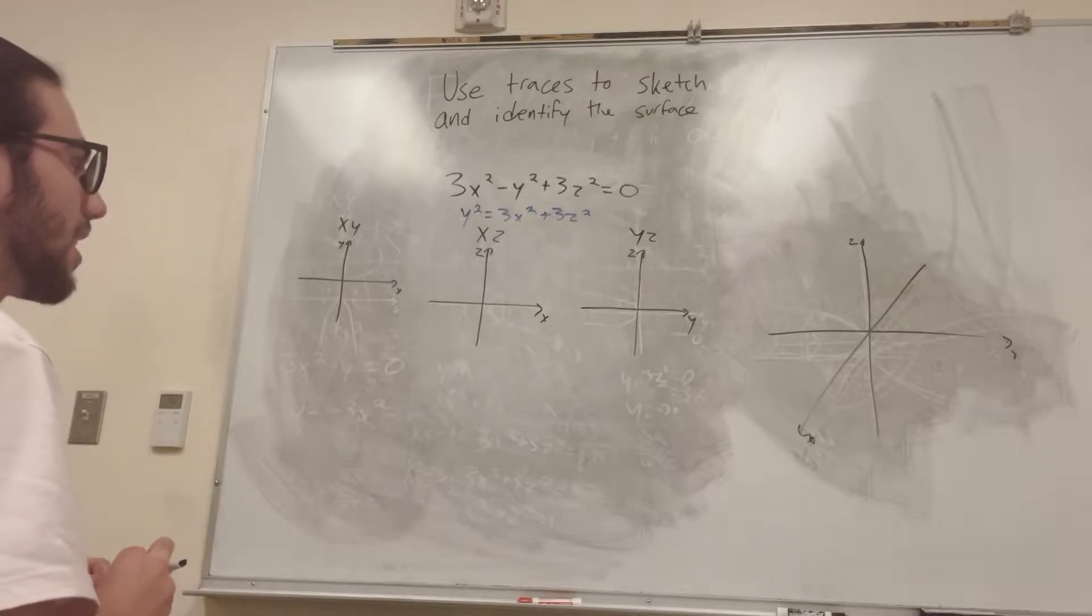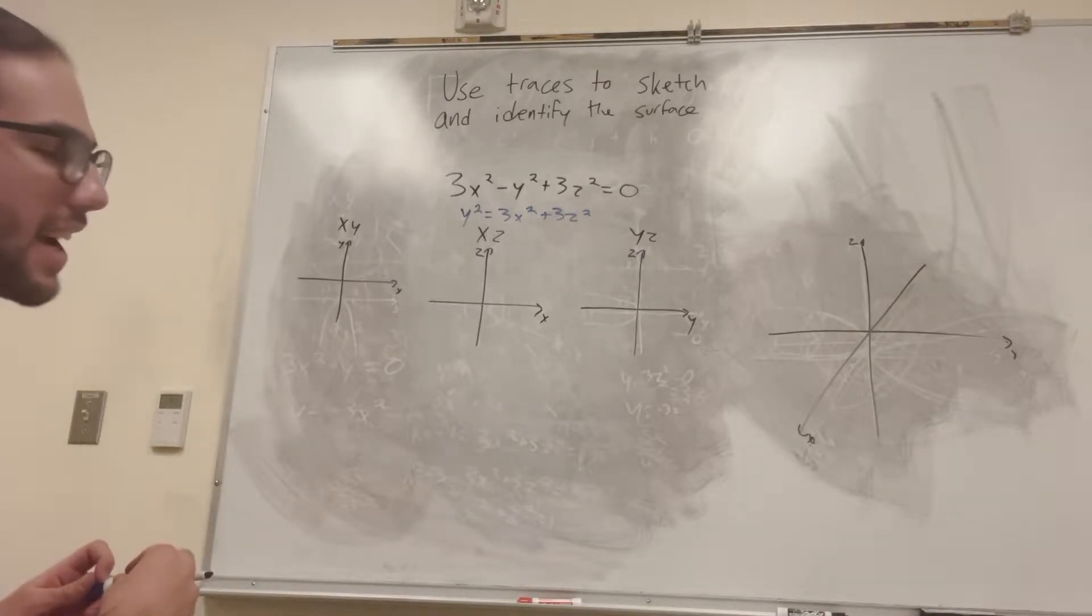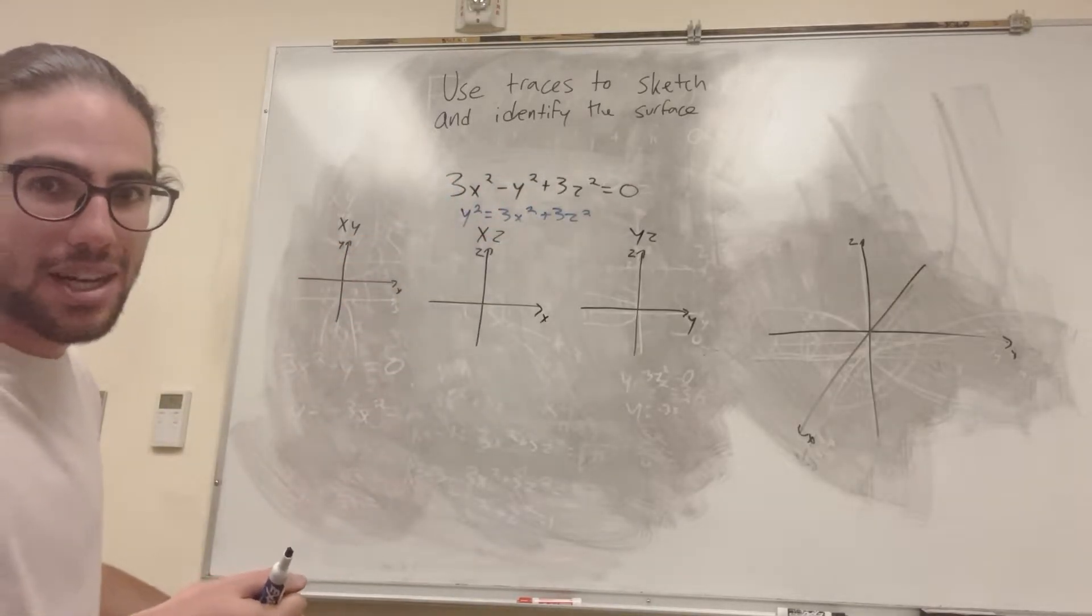Now this is a pretty easy kind of problem, because I know that this is a cone. But if you guys don't know that this is a cone, you just got to learn to recognize patterns. When you have y squared is equal to x squared plus z squared, that's how you know that's going to be a cone.